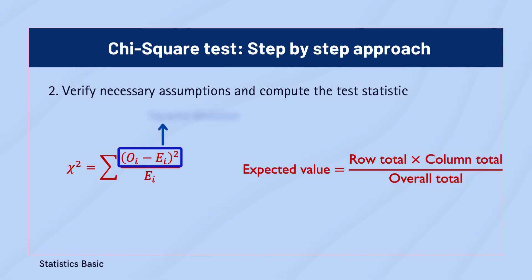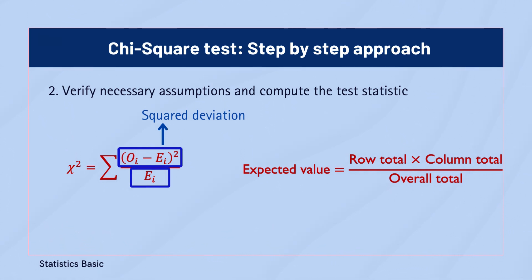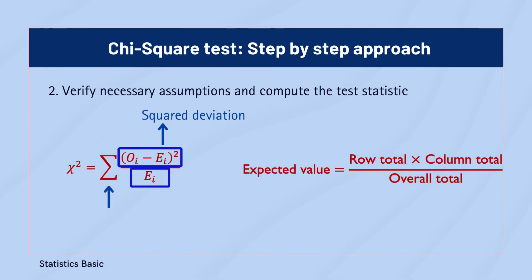Next, calculate the squared deviations by subtracting the expected frequency from the observed frequency for each cell in the contingency table and squaring the difference. Then divide each squared deviation by its corresponding expected frequency. Add up these values to obtain the chi-square statistic value.